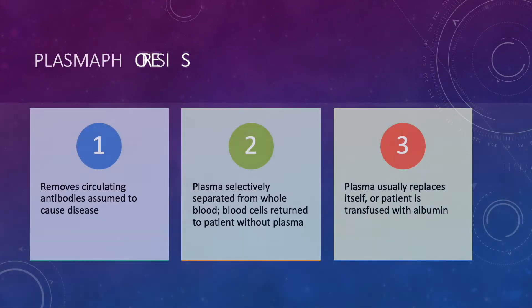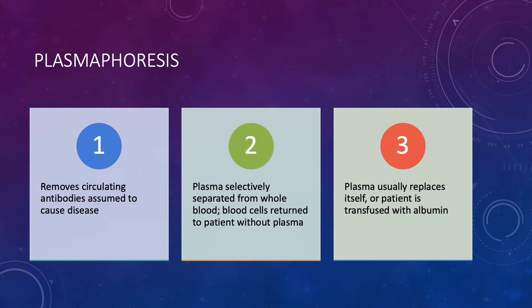A bit of a side note about plasmapheresis. Plasmapheresis is a process in which the liquid in the blood, or plasma, is separated from the cells. In sick people, plasma can contain antibodies that attack the immune system. A machine removes the affected plasma and replaces it with good plasma or a plasma substitute. Plasmapheresis accomplishes this by removing the circulating antibodies assumed to cause disease. The plasma is selectively separated from whole blood, blood cells are returned to the patient without the plasma, and the plasma usually replaces itself, or the patient is transfused with albumin — that is, the good plasma.